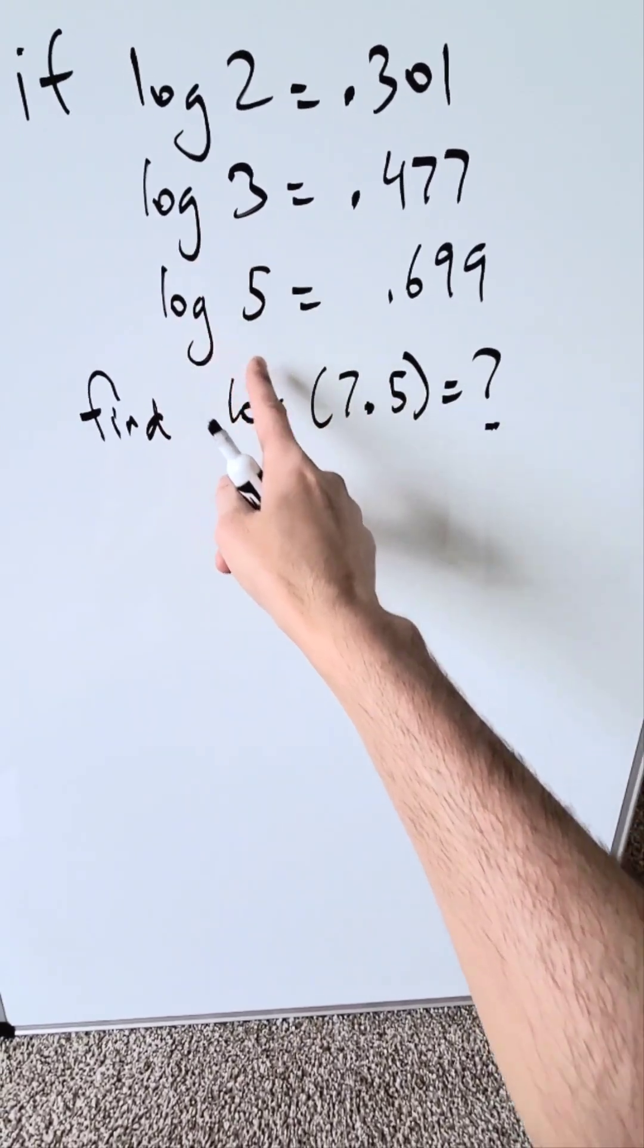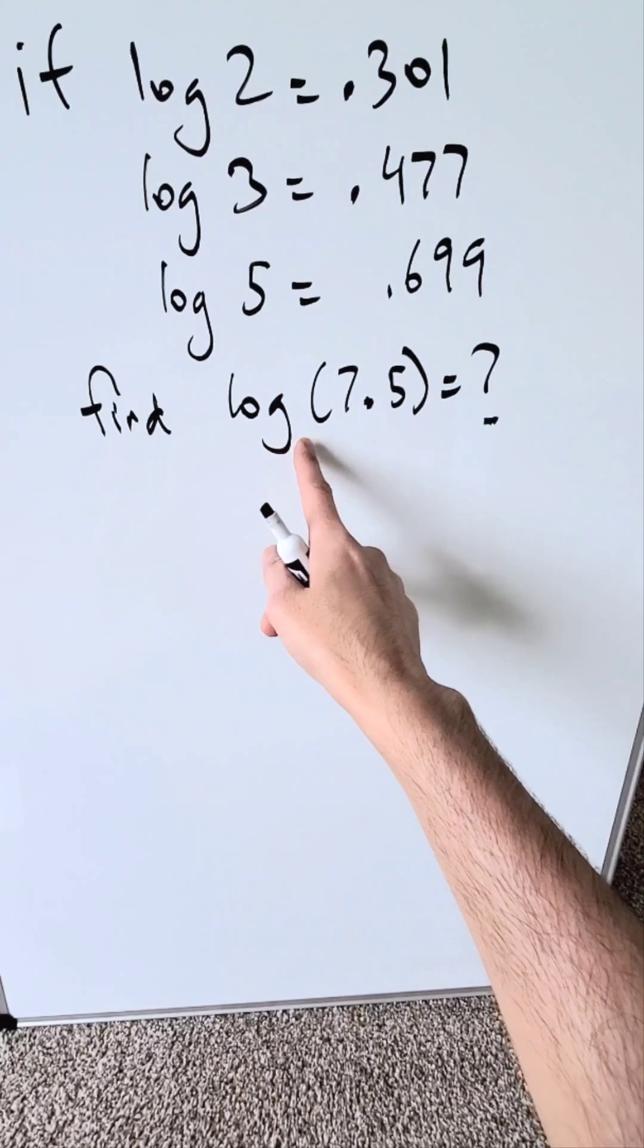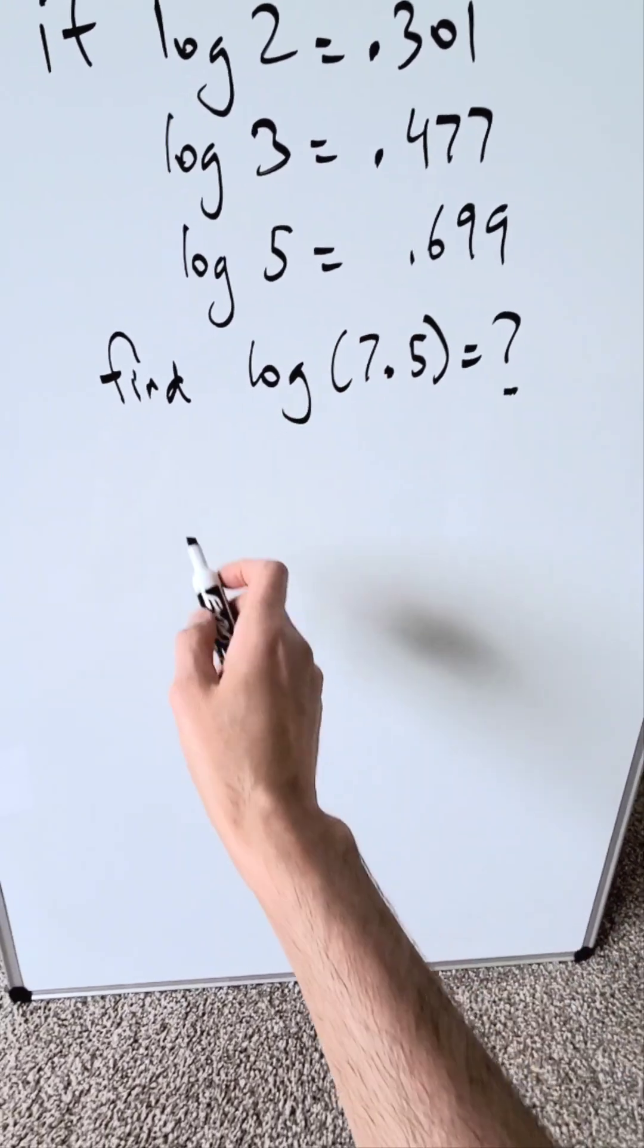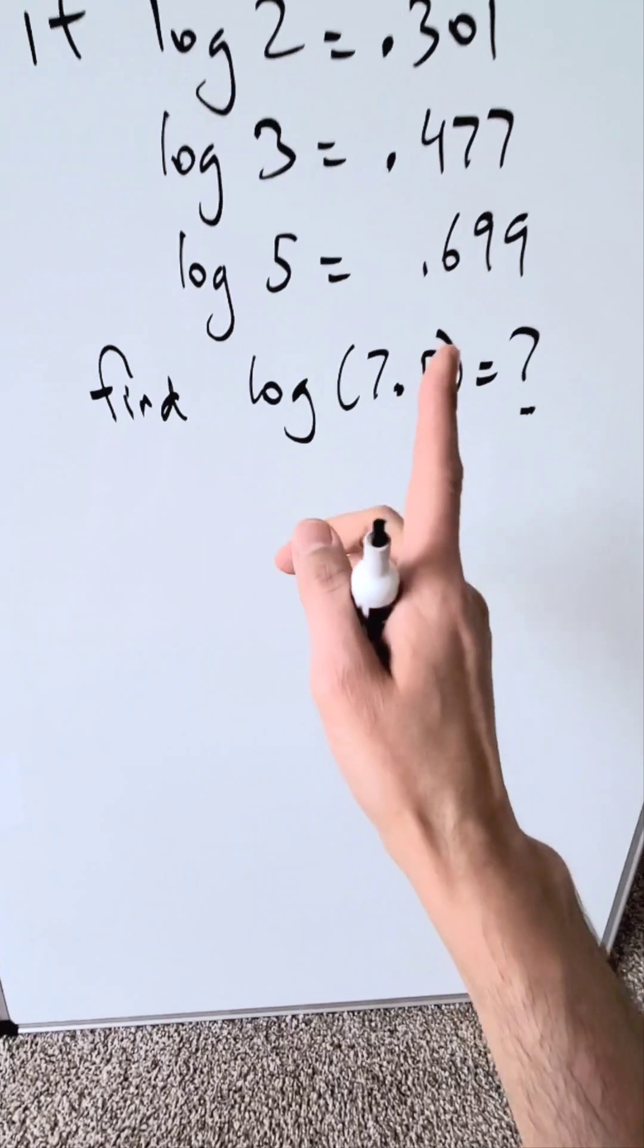In all of these instances, you don't see a base. When there's no base shown, these are always base log 10s. So keep that in mind. That's the default log base is 10.